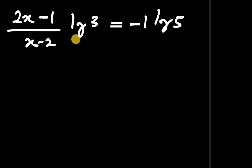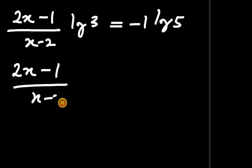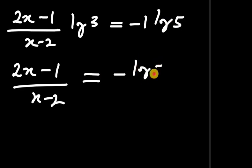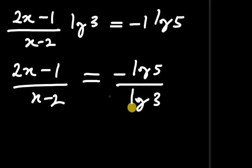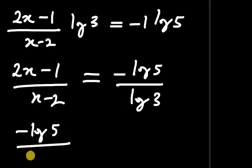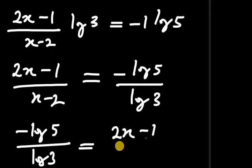Dividing both sides by log 3, we get (2x−1)/(x−2) equals negative log 5 divided by log 3. Rearranging, negative log 5 divided by log 3 equals 2x minus 1 divided by x minus 2.